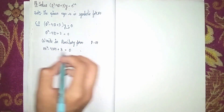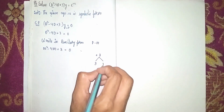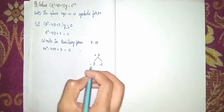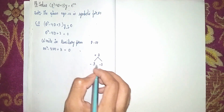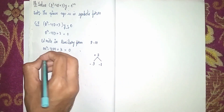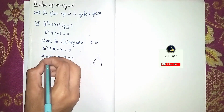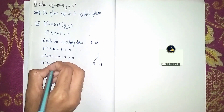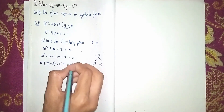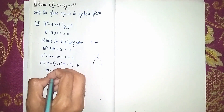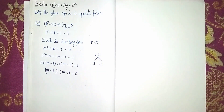Now I use the middle term splitting method to find the factors. The first and last terms multiply to give +3. I split -4m as -3m - m, since (-3) × (-1) = +3 and -3 + (-1) = -4. So m² - 3m - m + 3 = 0. Taking m common from the first pair gives m(m - 3), and taking -1 common from the second pair gives -1(m - 3).